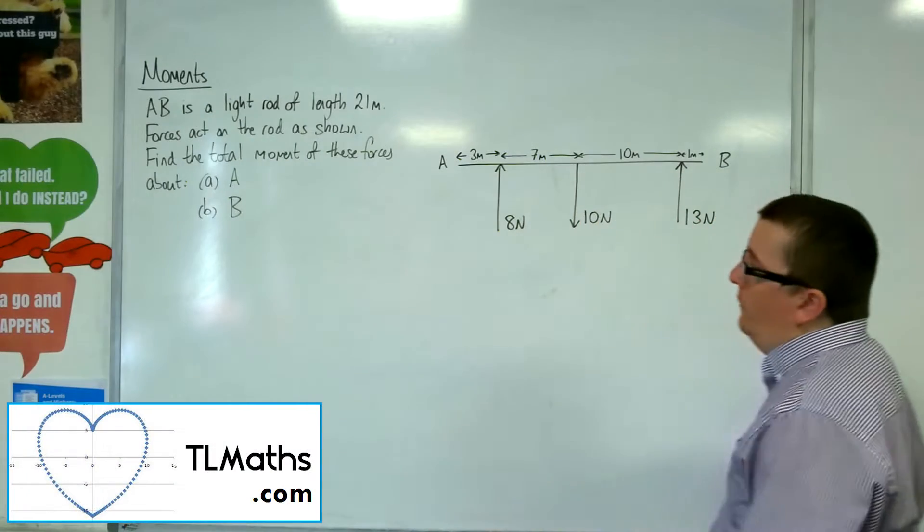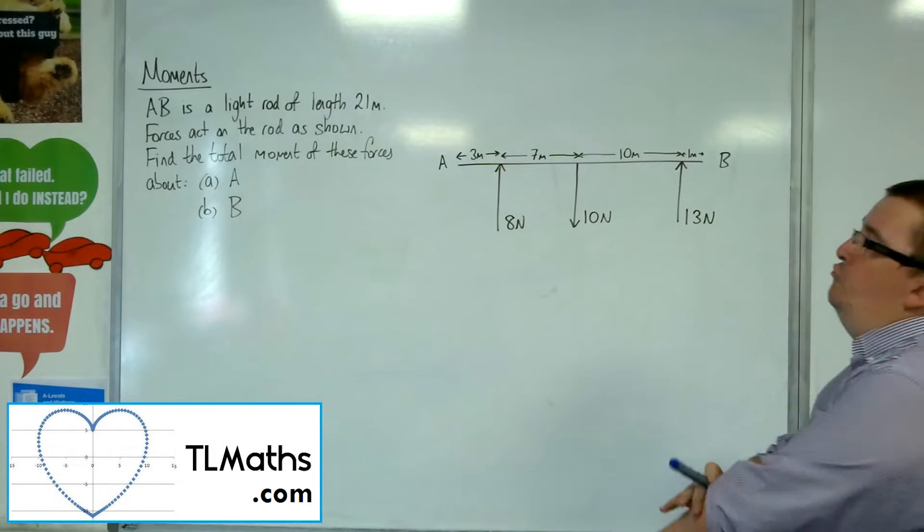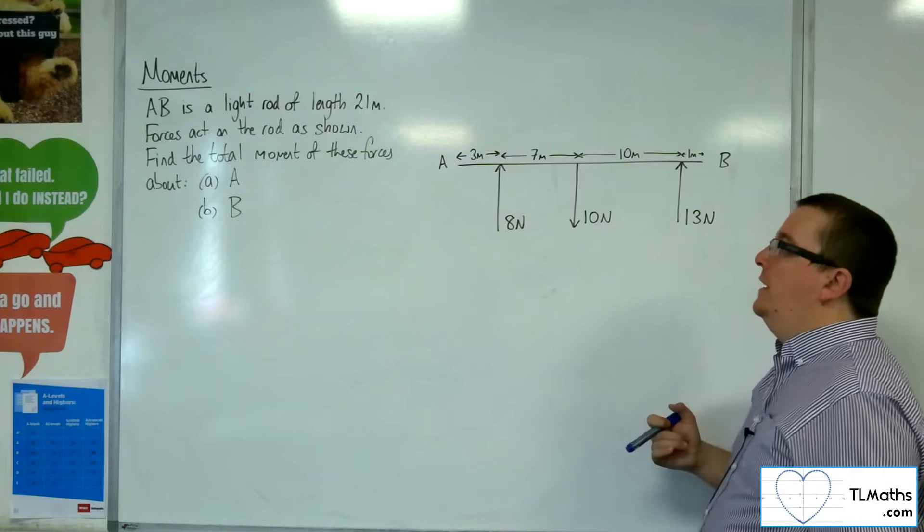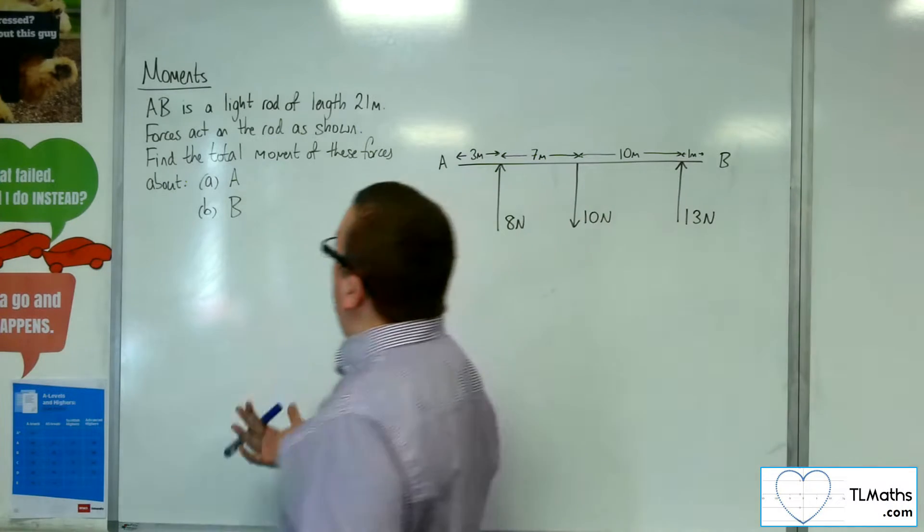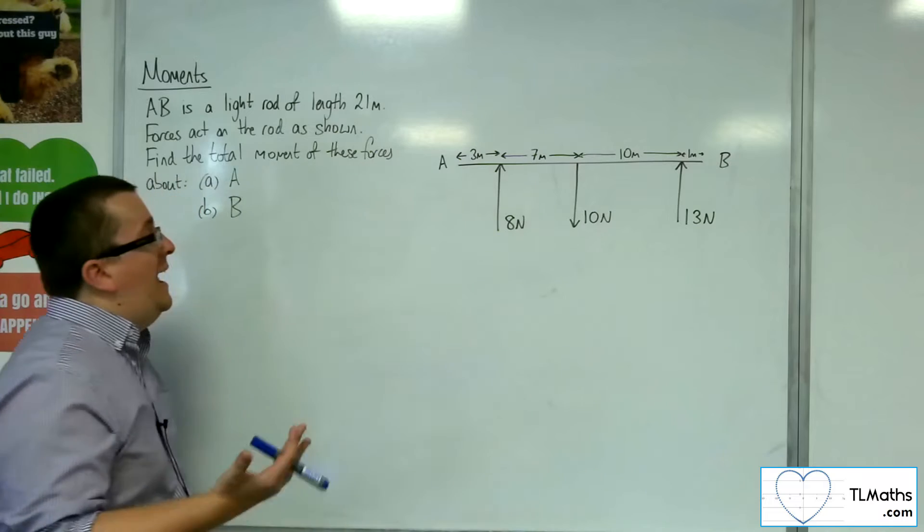Okay, so in this video we don't have a laminar, we instead have a light rod of length 21 meters. Forces act on the rod as shown, find the total moment of these forces about A and B.